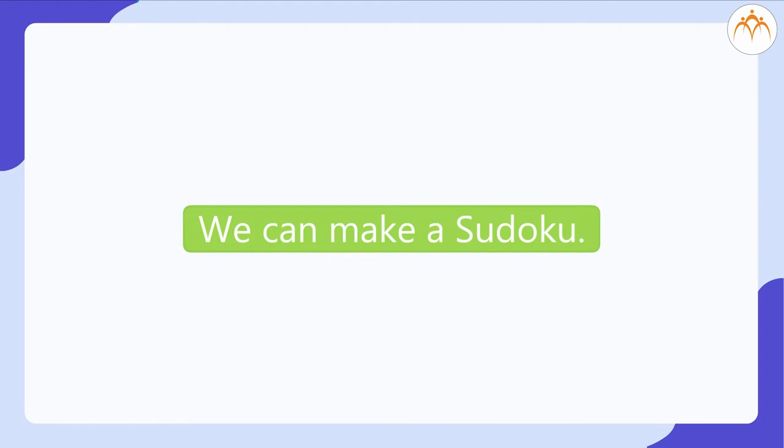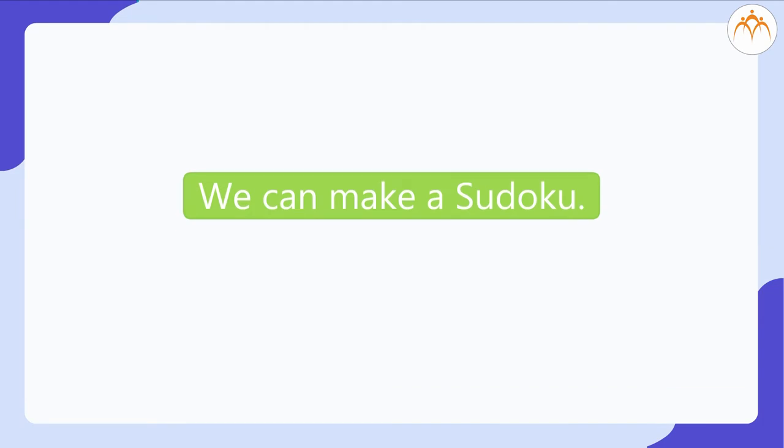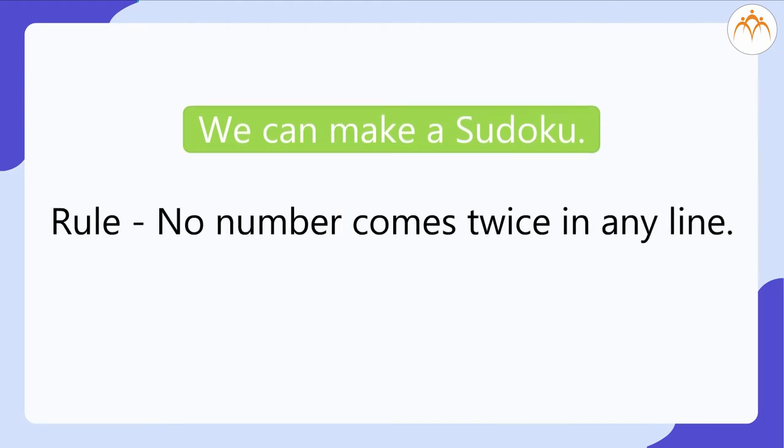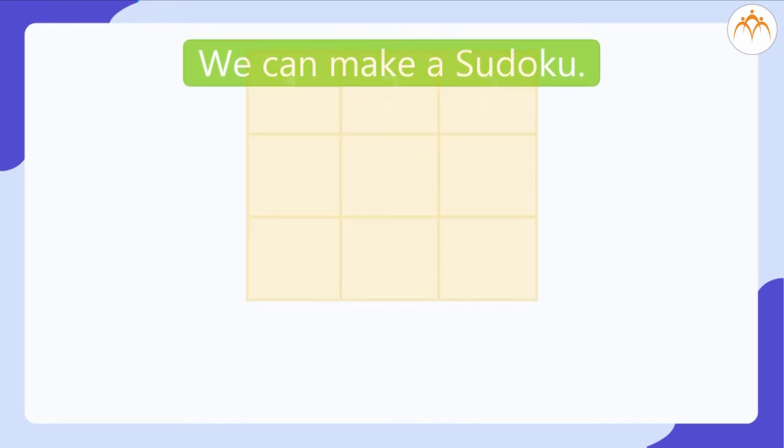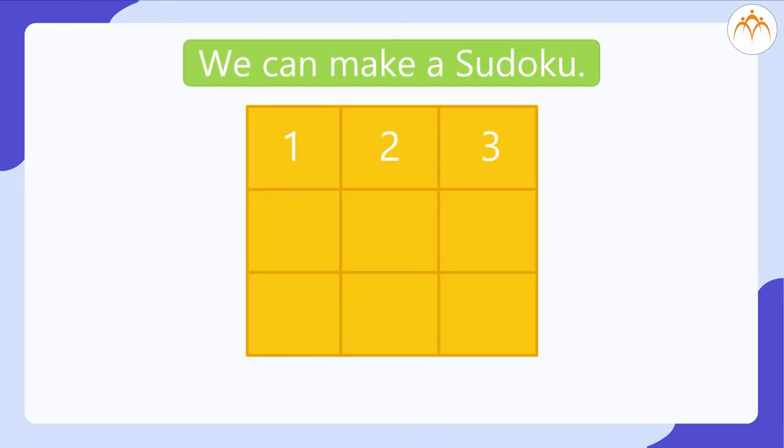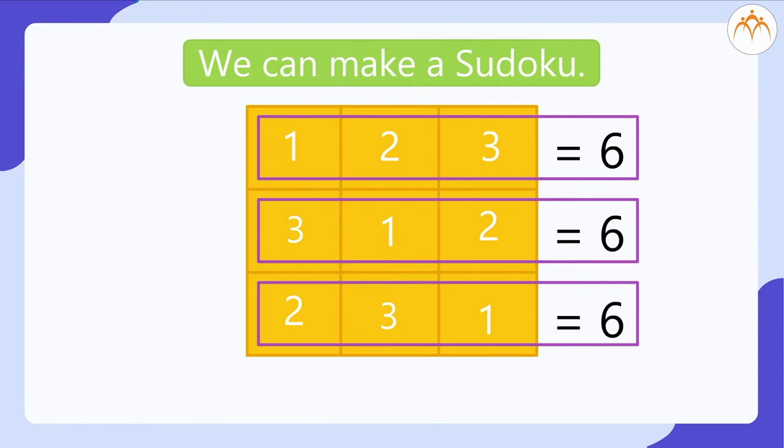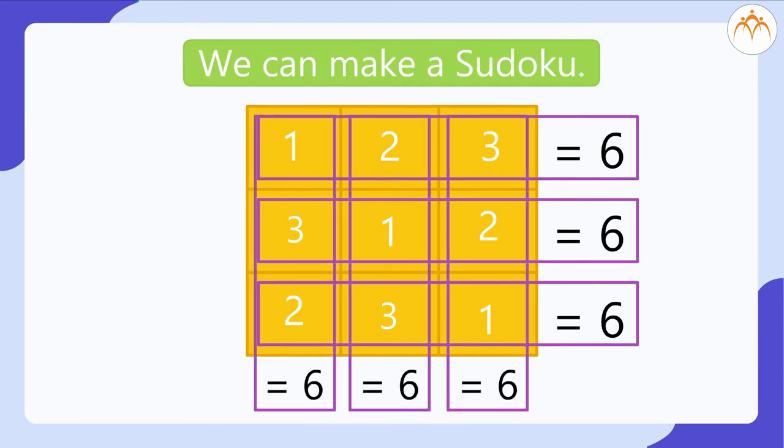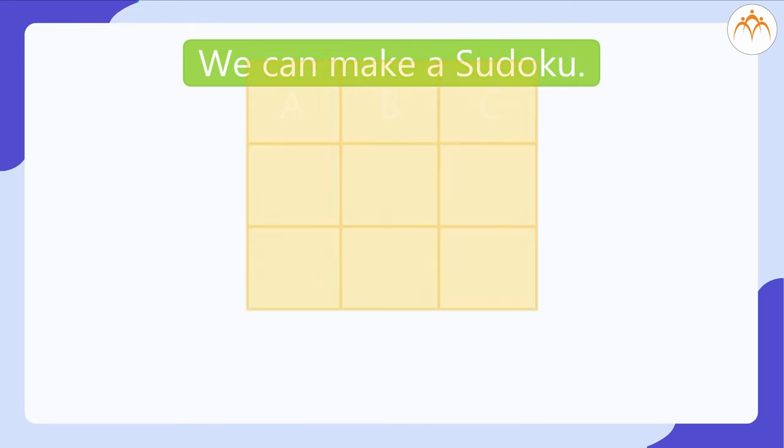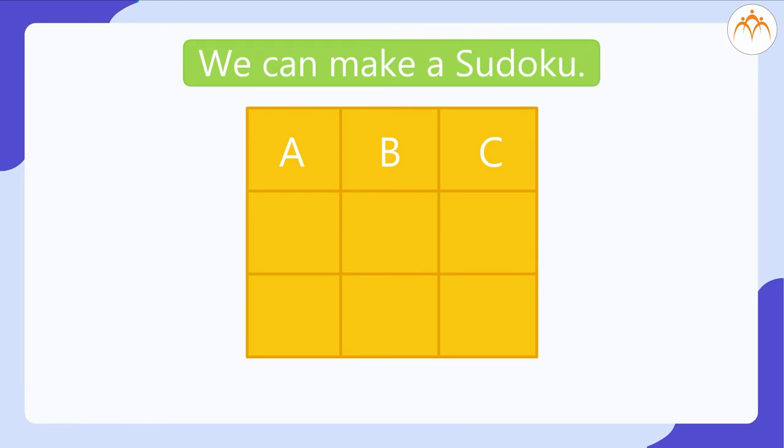A sudoku. We can make a sudoku. The rule is no number comes twice in any line. Use numbers 1, 2, and 3. 1, 2, 3, 3, 1, 2, 3, 1. Add the numbers in rows the total is 6. Add the numbers in columns total is 6. Now try writing the letters A, B, C in the box so that no letter comes twice in any line.